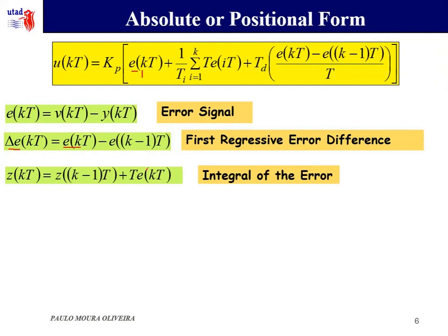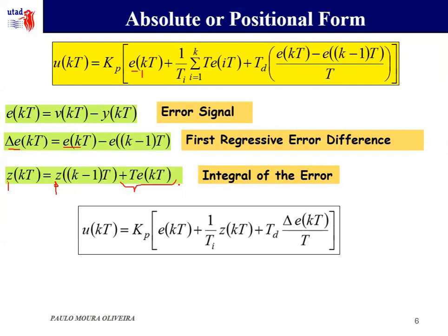The integral of the error can be represented by using this variable Z_T, which is obtained by the integral in the previous sample plus the approximation of the rectangular approximation T times the error in sample K. Another way of representing the absolute form is this way, expressed by this equation.